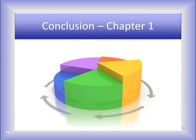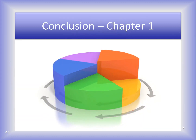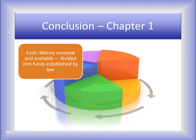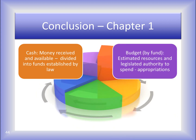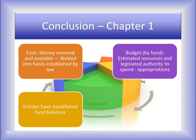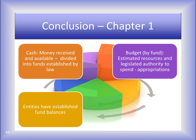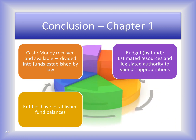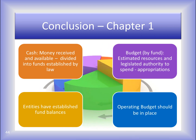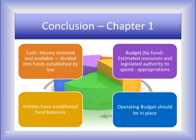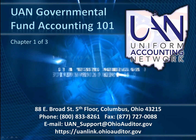Let's review what you've learned in Chapter 1. Cash is the money received and available — it's divided into funds that are established by law. The budget, by fund, is made up of estimated resources and the legislative authority to spend, known as appropriations. Entities have already established fund balances, so when you start work, your funds and their balances will already exist. The operating budget should already be in place. It will be up to you to review the revenue estimates and appropriations and determine what each figure represents. This concludes Chapter 1 of Fund Accounting 101.